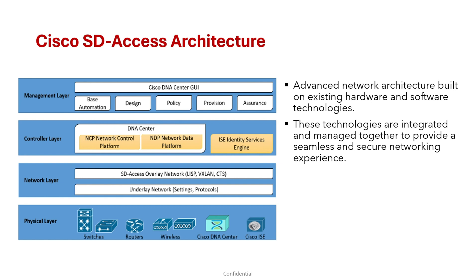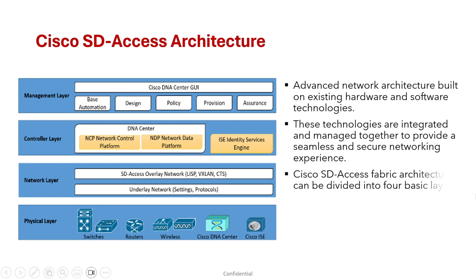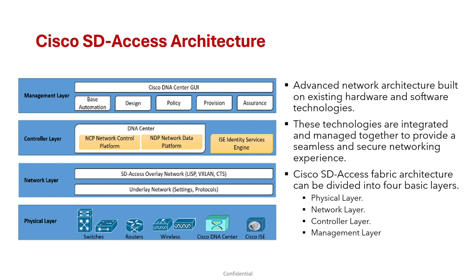The Cisco SD Access Fabric Architecture can be divided into four basic layers: the physical layer, network layer, controller layer, and management layer. Let's look at each of these layers in detail.